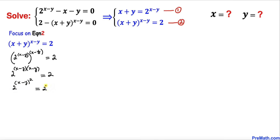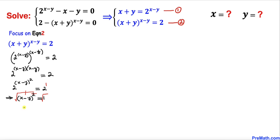On the right-hand side, 2 can be written as 2^1. Now we can see that both sides have base 2. Since the bases are the same, we can equate the exponents, giving us (x−y)² = 1. Taking a square root on both sides, we get x − y = ±1.